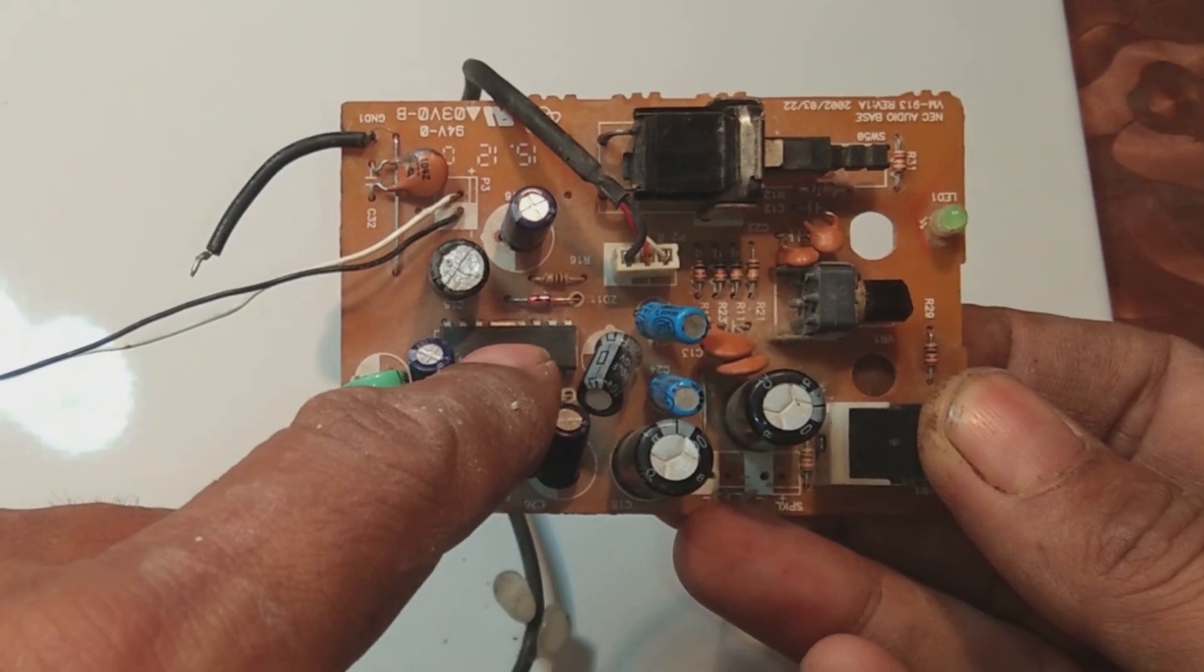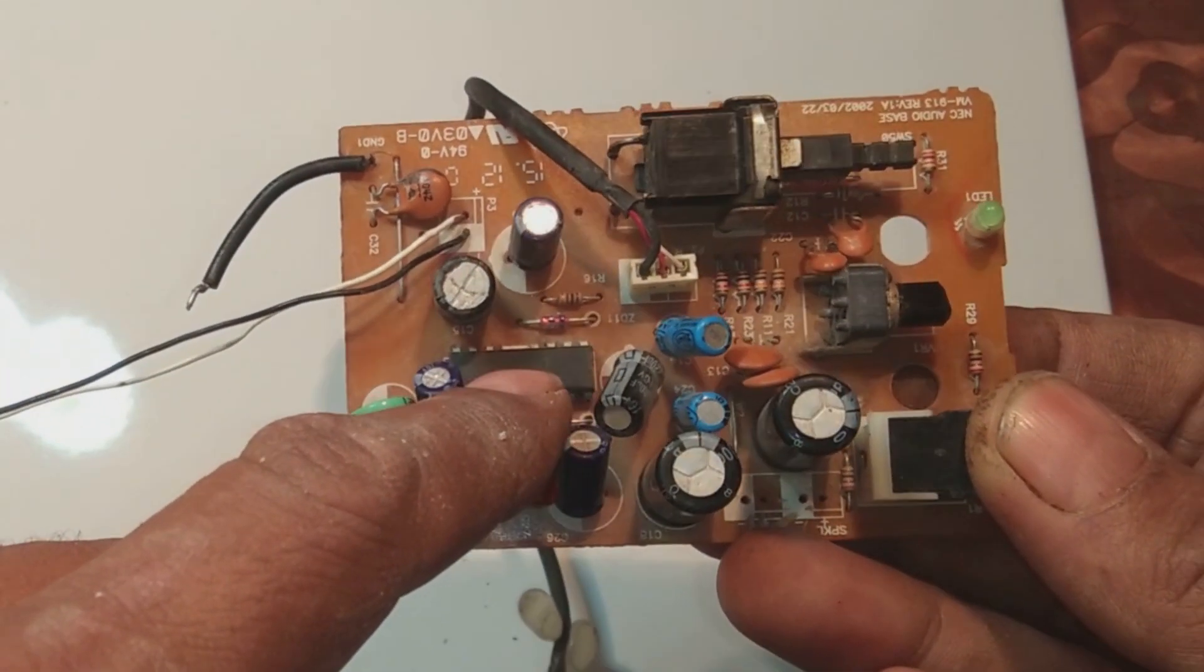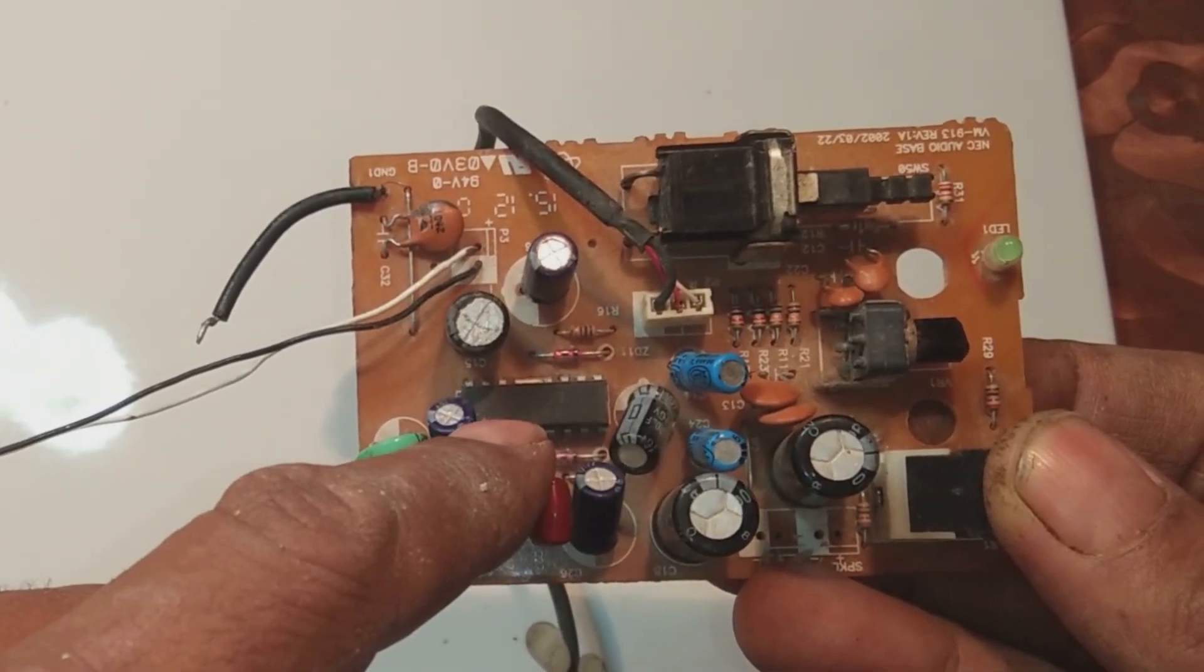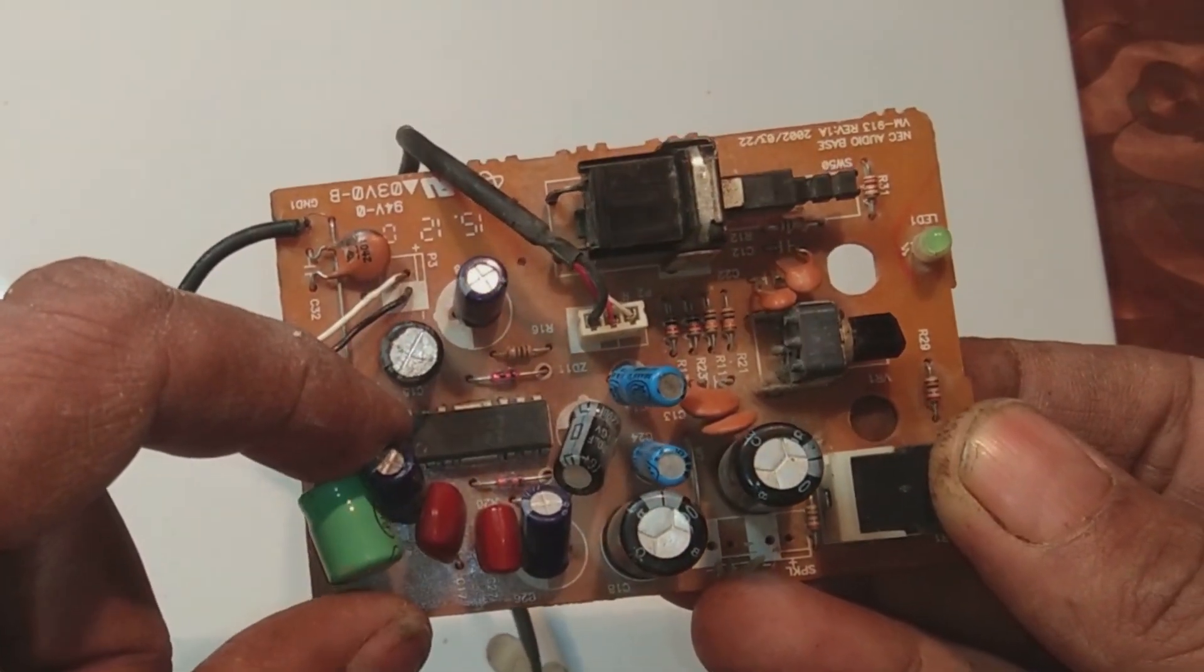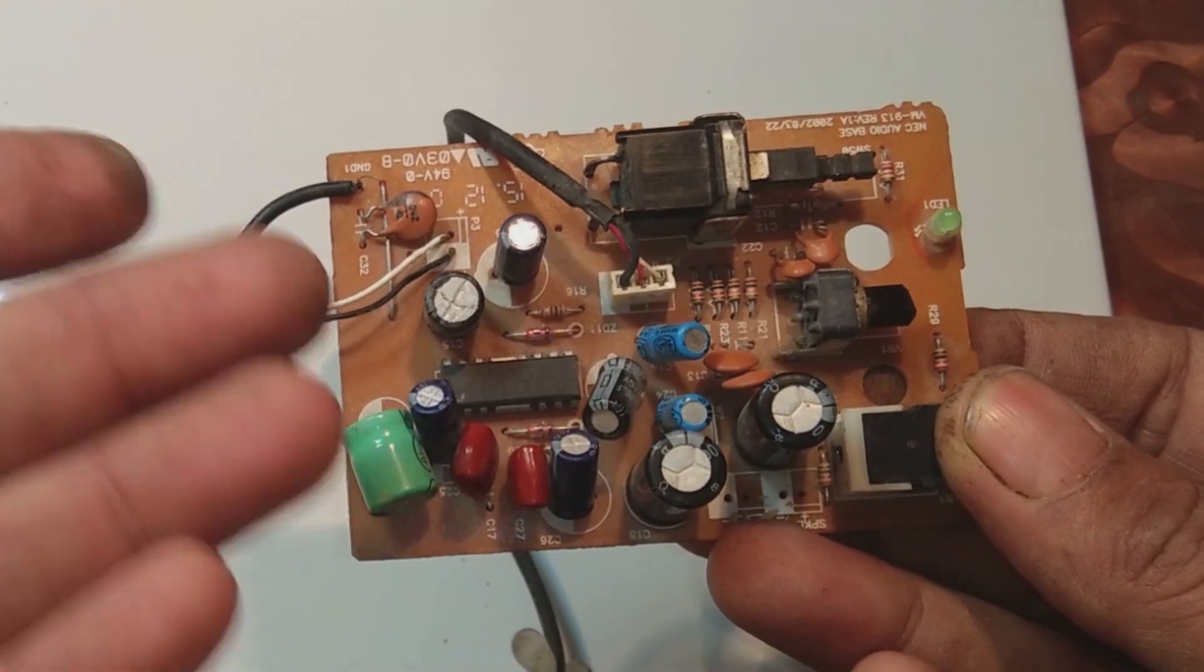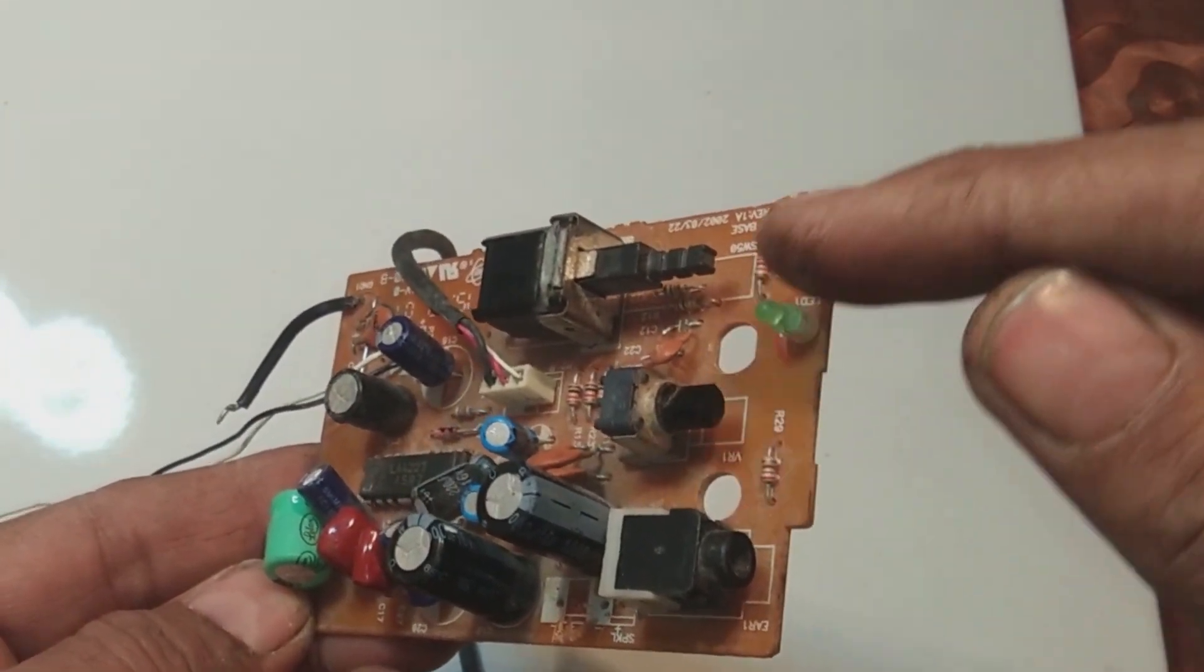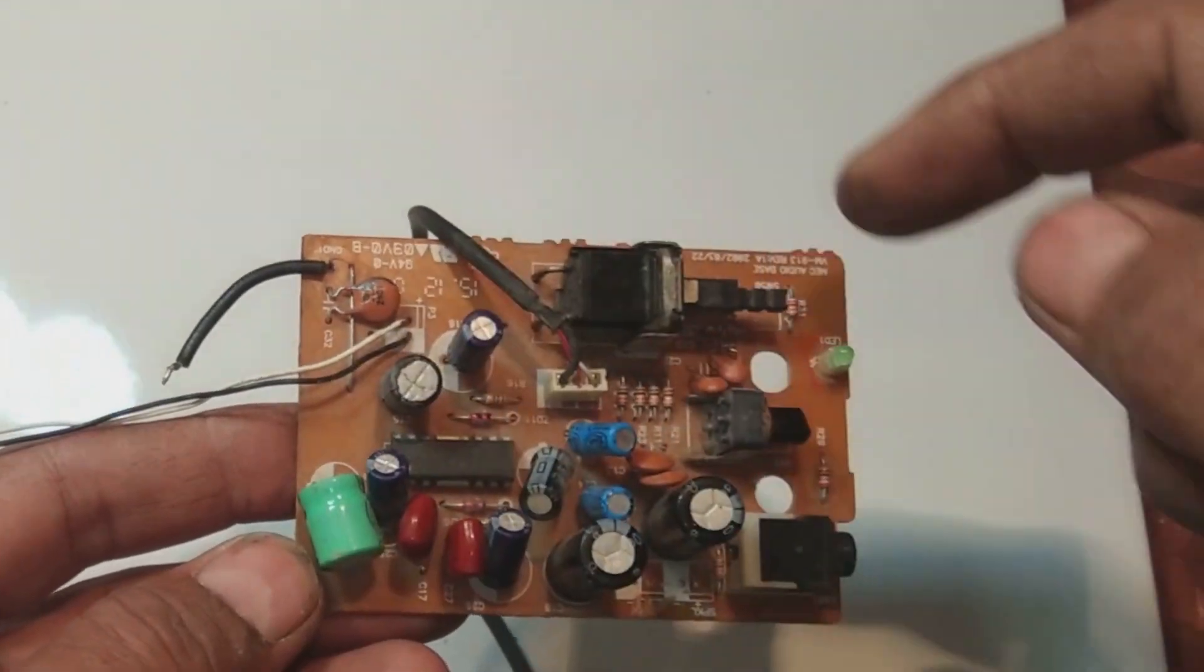Here, this IC chip you can see. While looking at this IC, if you Google this number which is written on it - LA4227 - if you Google it, it will show you that this is an audio amplifier.